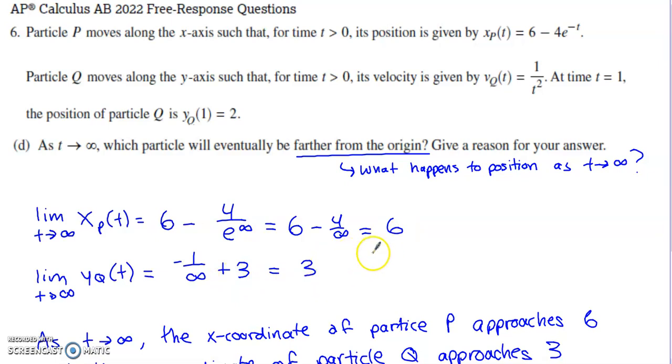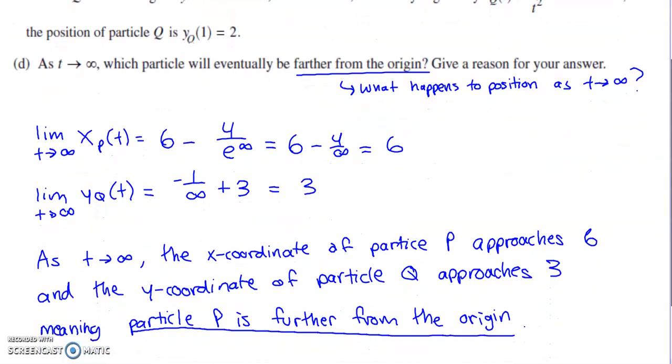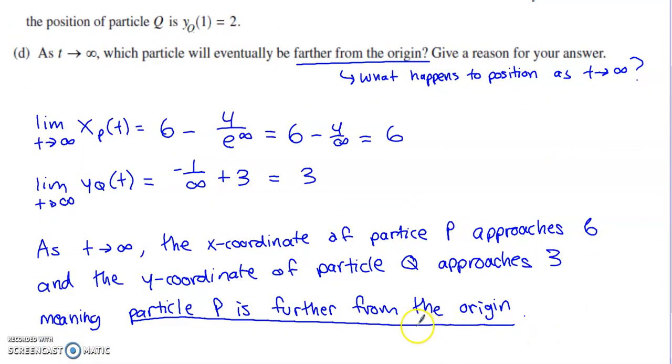We don't run into the issue I cautioned you about earlier. Both of these are positives. Because we have an x-coordinate of 6 as t approaches infinity for particle P, and a y-coordinate of 3 as t approaches infinity for particle Q, particle P is going to be the one that is farther. Let me stay consistent with what they said there. Particle P is definitely the one that is a larger magnitude from the origin.